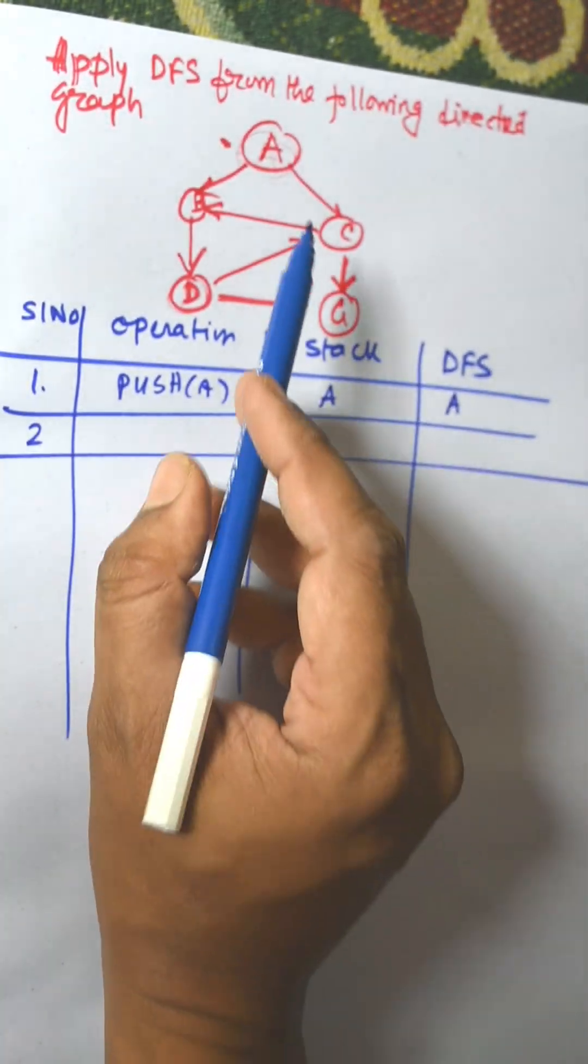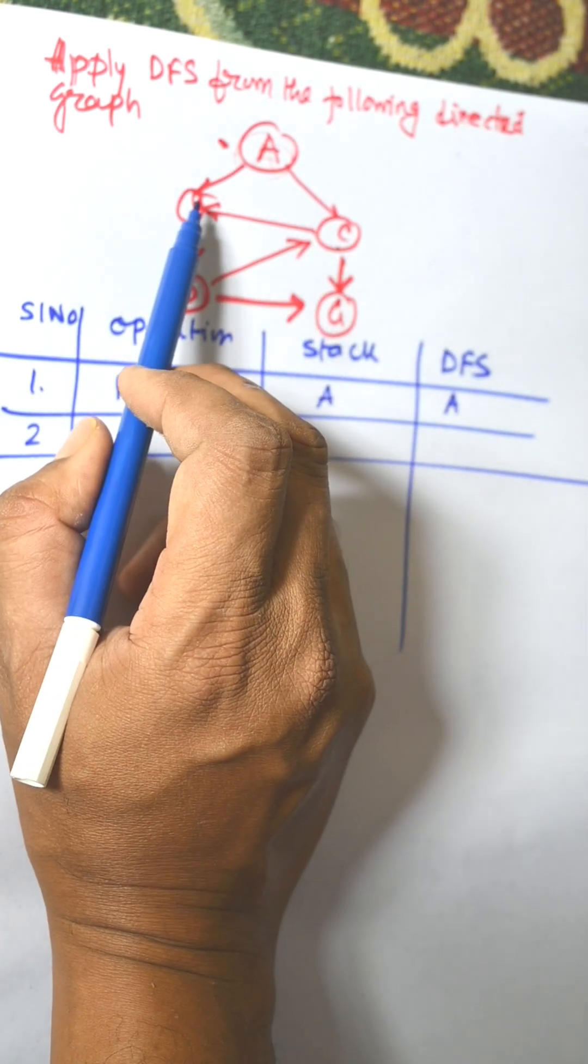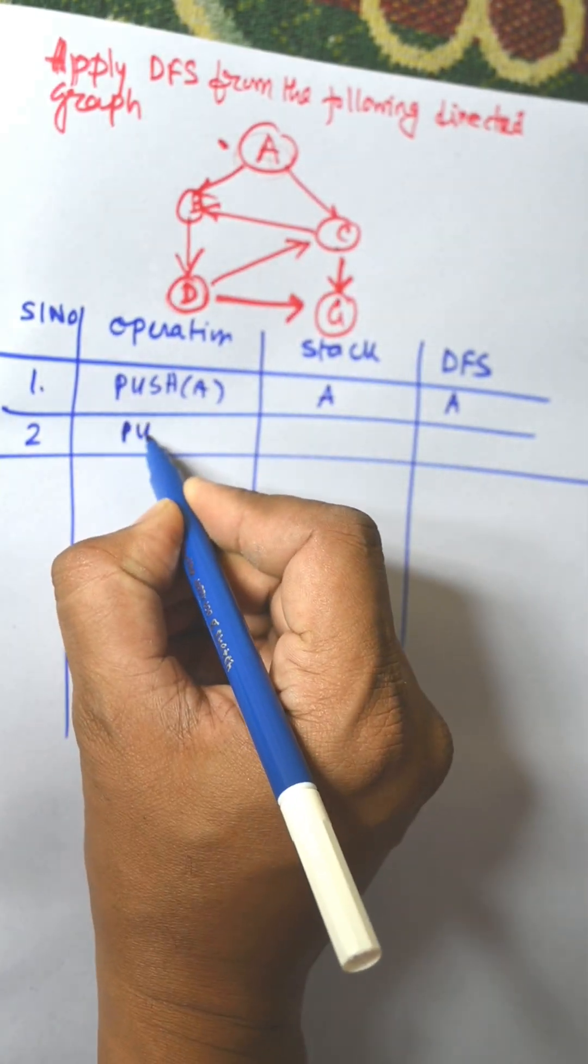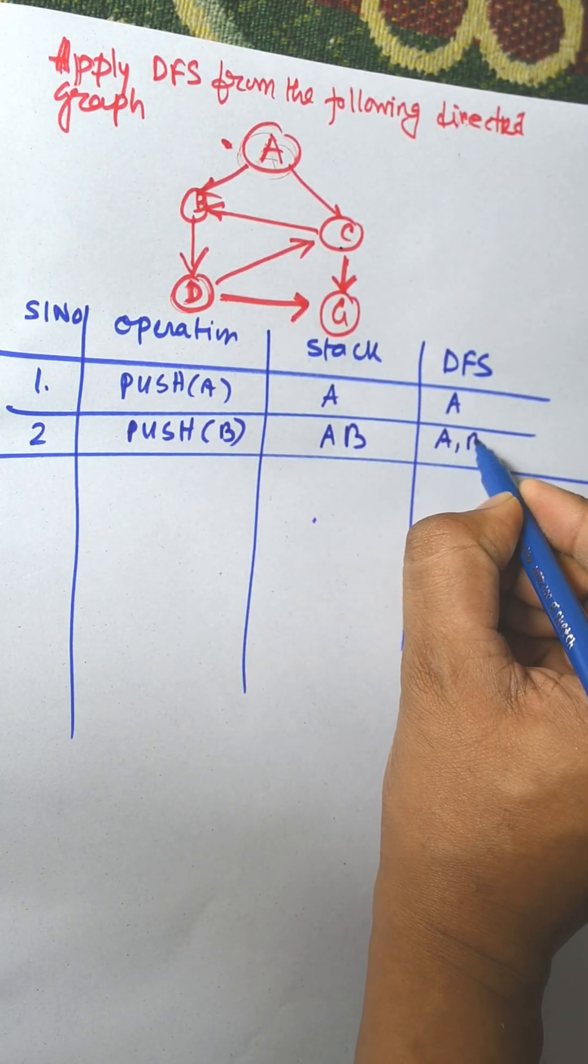Now next, from A we can visit either B or C, but according to the name B, we need to visit B. The operation is push B, stack is A B, and DFS is A comma B.